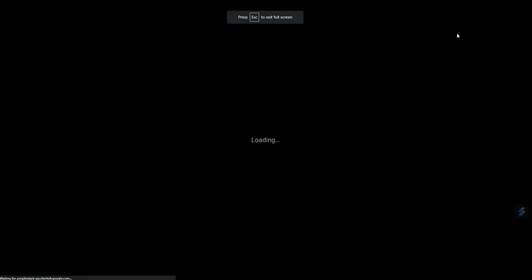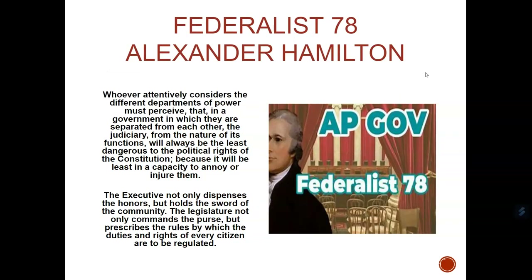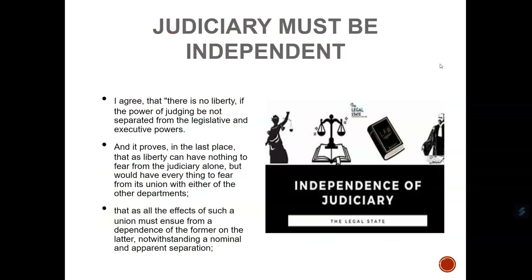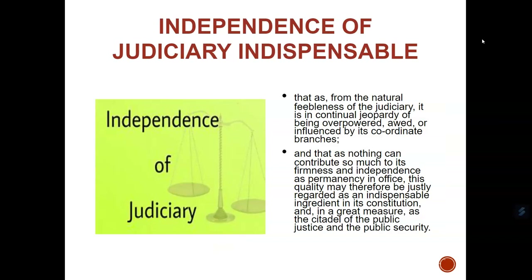The big headings should give you a direction of what Federalist 78 was all about. No surprise, it was written by Alexander Hamilton, and it talked about judicial power - the judiciary, that third branch of government. In 78, it said the judiciary must be independent. That is huge. It has to be a separate entity left to its own devices. The independence of the judiciary is indispensable. They reinforced and hammered this point home - an independent judiciary.